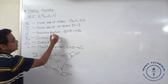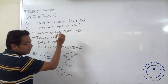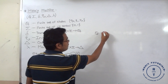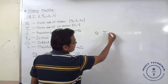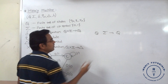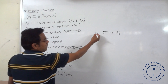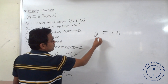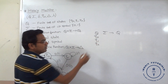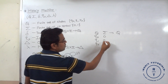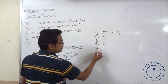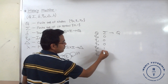Next is transition function — capital Q, for any input symbol offered, it goes to capital Q, meaning it goes to the next state. Capital Q contains Q0, Q1, Q2. Input symbol is 0: suppose 0 is offered at Q0 state, Q1 state, Q2 state; or 1 is offered.